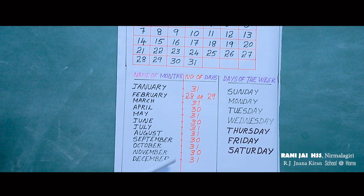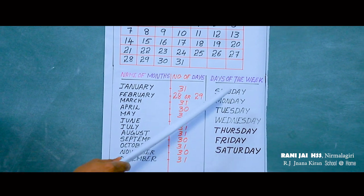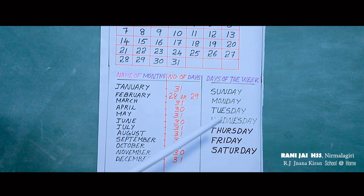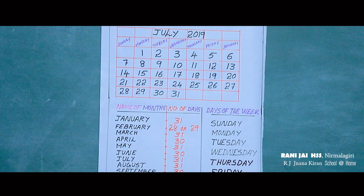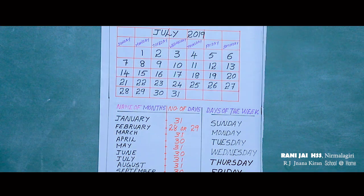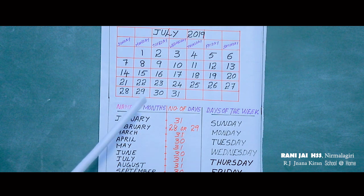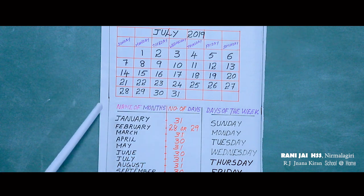Last month — December. How many days in December? 31 days. Now look — these are the days of the week: Sunday, Monday, Tuesday, Wednesday, Thursday, Friday, and Saturday. Now look at this calendar of July 2019. July 1st is Monday. July 11 is Thursday. July 27 — which day? Saturday. July 30 is Tuesday.